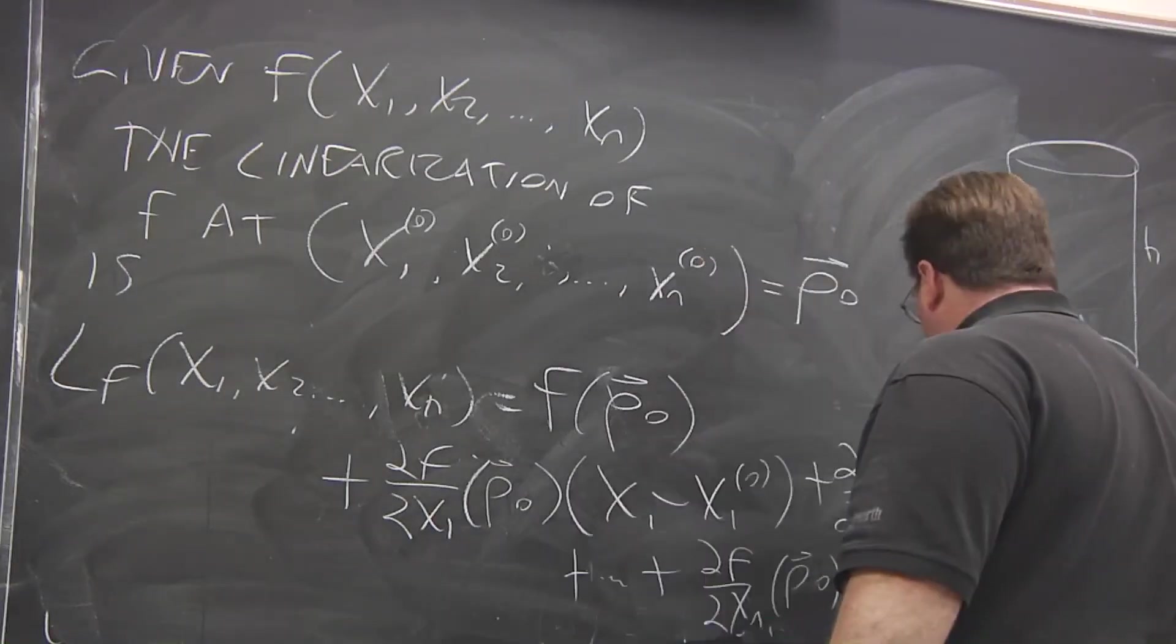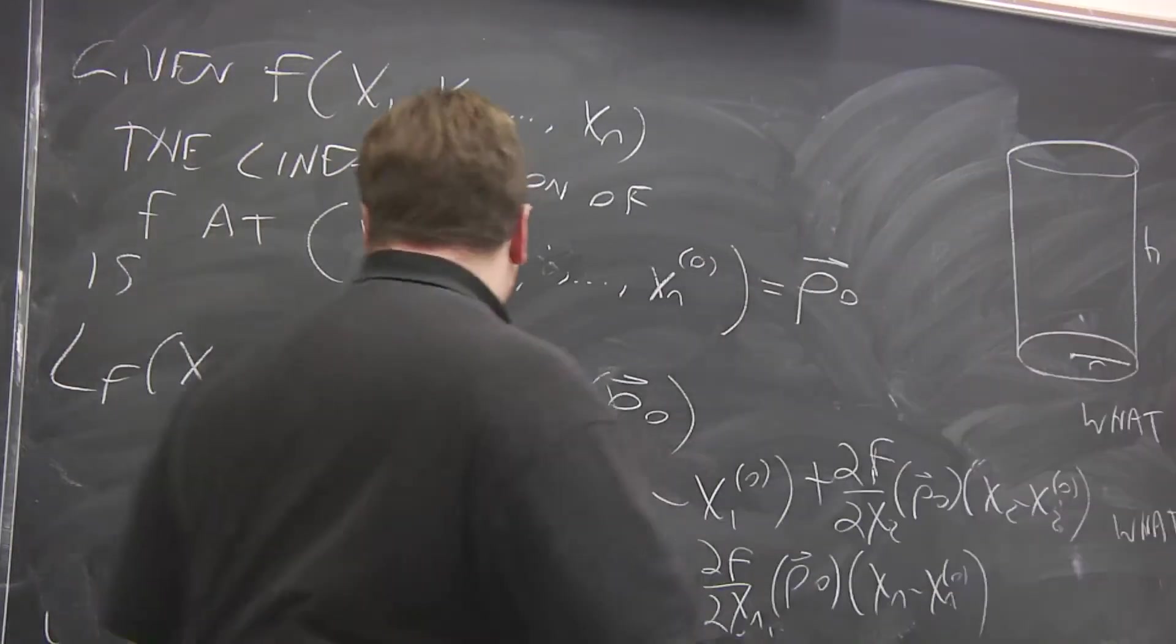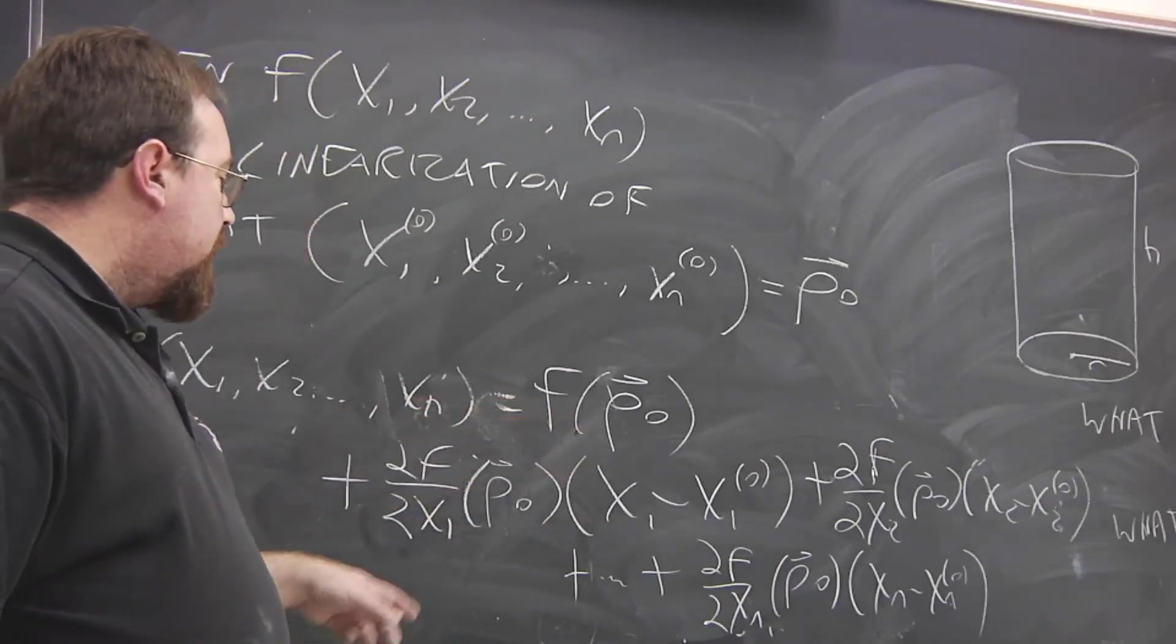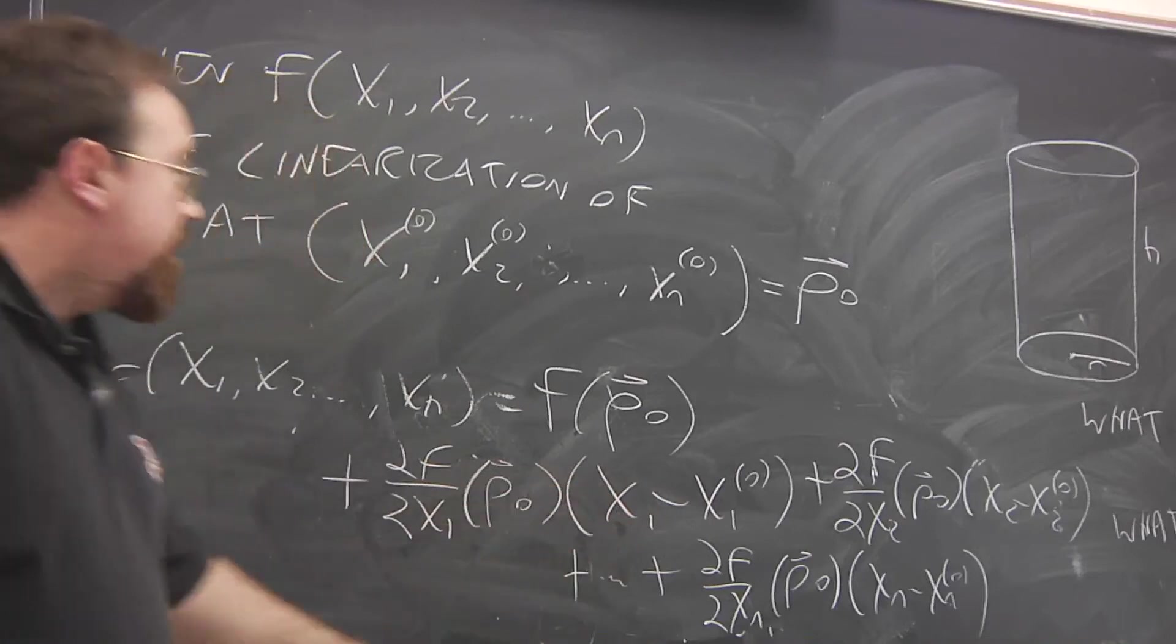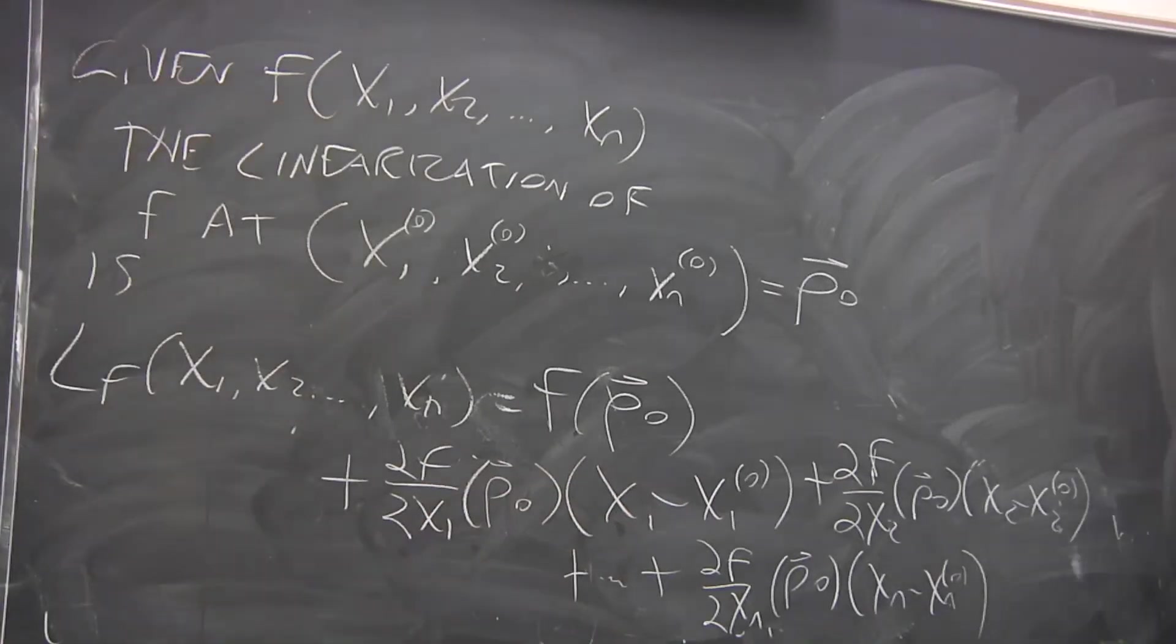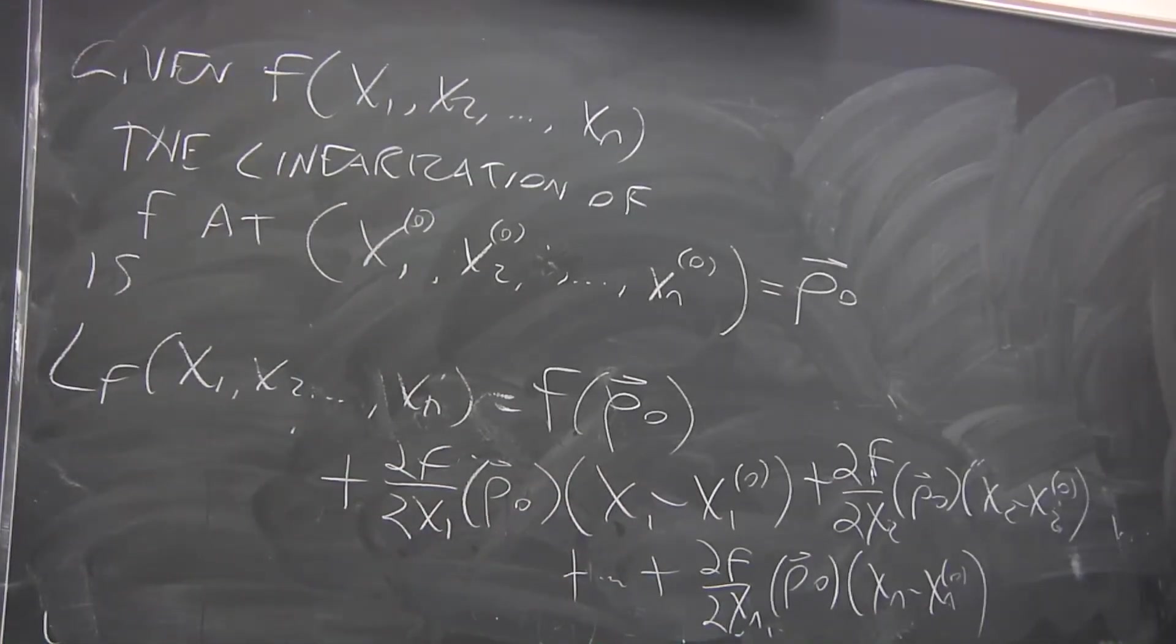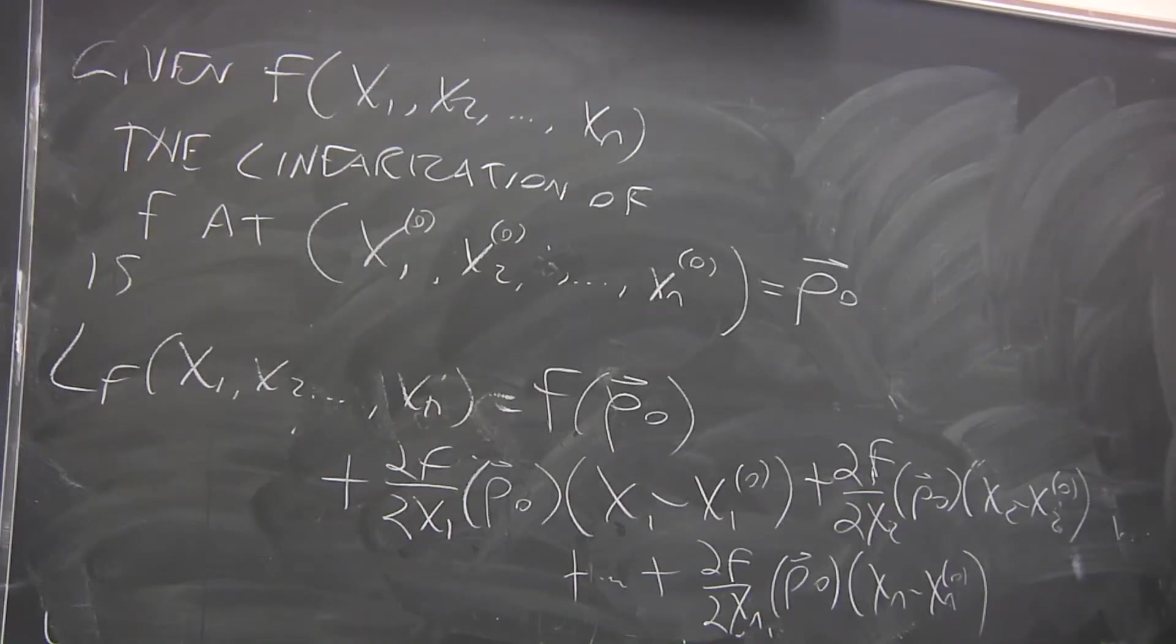So however many variables we have, it's the same idea. The linearization is the value of function at that point, and then you take each of the partial derivatives multiplying by the change in the corresponding variable. But as you can see, once you get the higher numbers of variables, it all gets very cumbersome.